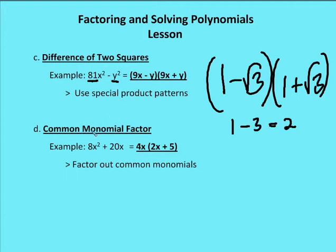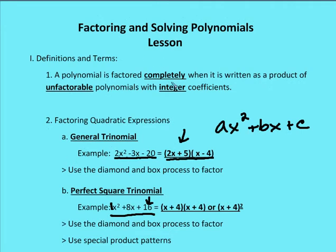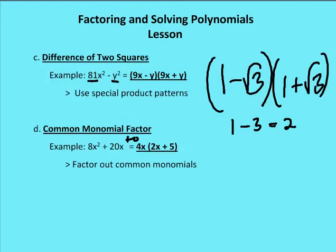Number four is the common monomial factor, which you should have learned in Algebra 1. We find a common factor between the terms. In this quadratic, 4x is the common factor between the two terms, so we factor out 4x and are left with 2x plus 5. Now the polynomial is factored completely — written as a product of unfactorable polynomials with integer coefficients.